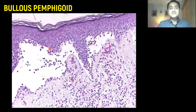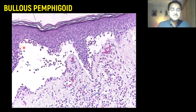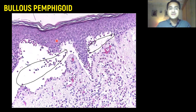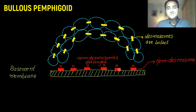This is a histology picture of bullous pemphigoid. When you take a biopsy from a bullous pemphigoid lesion and look at it under the microscope, you can see the basement membrane and how the skin layer has detached from it. There is a space between the skin and the basement membrane — this is where the hemidesmosomes have been destroyed.